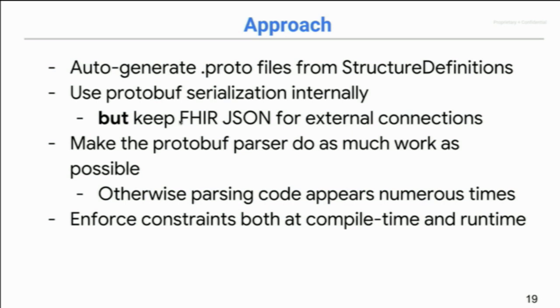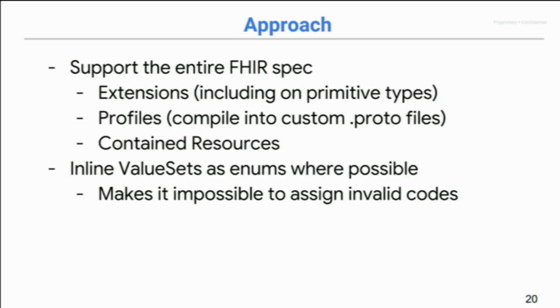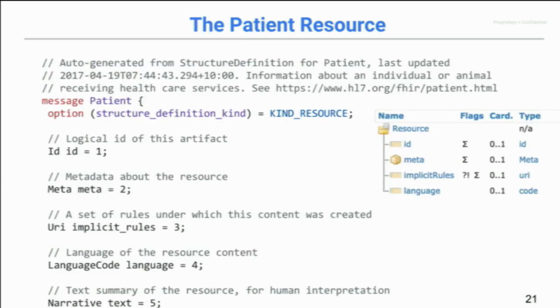And then also the parser, obviously, enforces more constraints at runtime. And we also wanted to support the entire spec, because we realized that as our usage grew, that we can never quite predict what would come next. And it was just easier to just do it once and make sure that we've covered everything. And we also wanted to cover things like profiles and extensions in detail. And I'll talk a little bit more about that later. Because that actually makes the use of FHIR easier. And as I mentioned, when we can, we start to inline value sets.